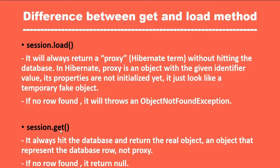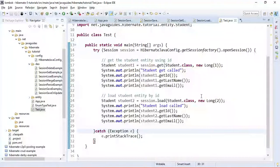In case of session.get(), it always hits the database and returns the real object — an object that represents a database row, not a proxy. When we call get(), it retrieves the record directly from the database. If no records are found, it returns null instead of throwing an exception.